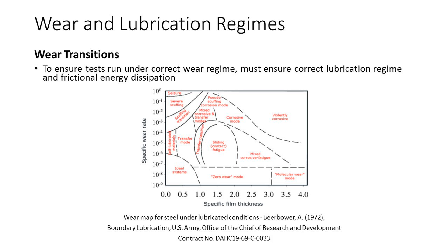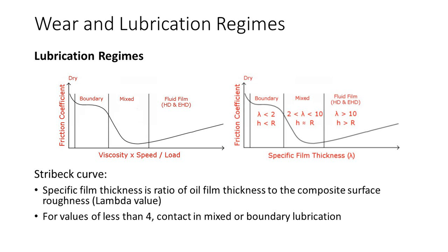If we are to model a specific real-life wear mechanism, we need to make sure that our experiment is run under the correct wear regime. Although there are numerous wear mechanism maps — see Lim and Ashby, for example — for dry sliding contacts, there are very few for lubricated contacts. One example worth noting is that proposed by Beerbauer in 1972 for a steel contact under boundary lubrication. To ensure our tests are run under the correct wear regime, we must ensure that we run under the correct lubrication regime with appropriate frictional energy dissipation.